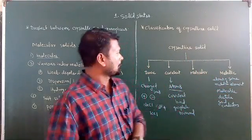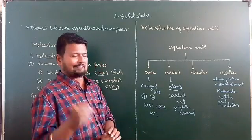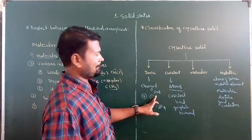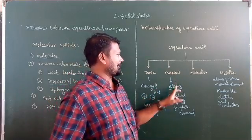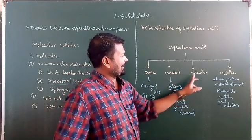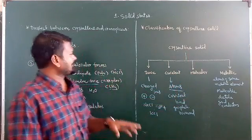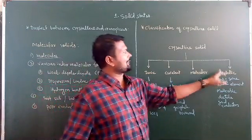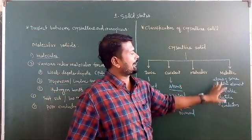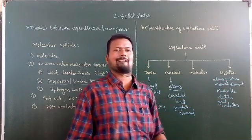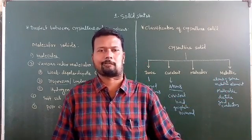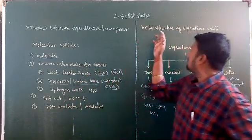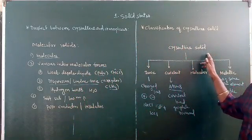To summarize the classification of crystalline solids: ionic solids have charged ions as constitutive particles; covalent solids have atoms joined by covalent bonds; molecular solids are made of molecules; and metallic solids consist of atoms of the same metallic element. In this way we can classify crystalline solids.